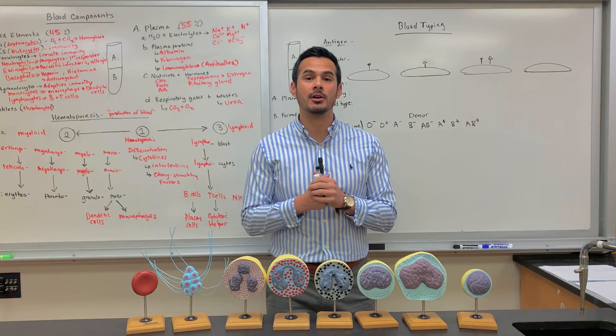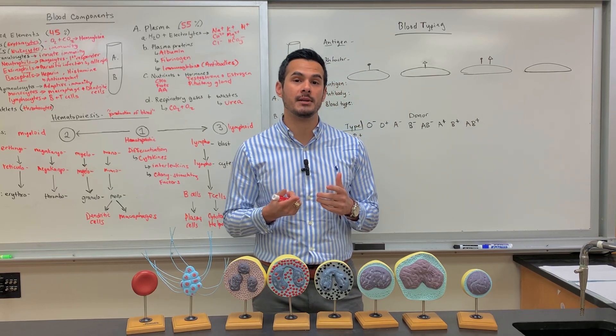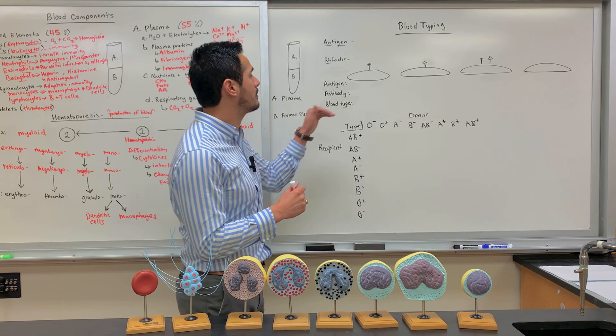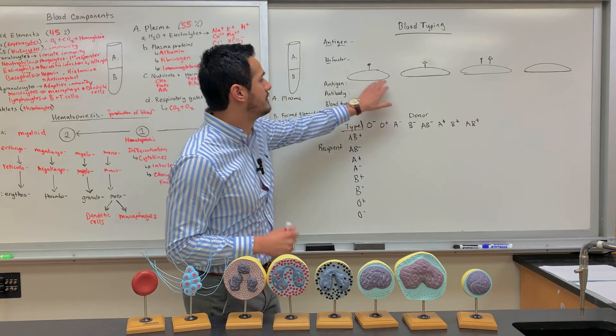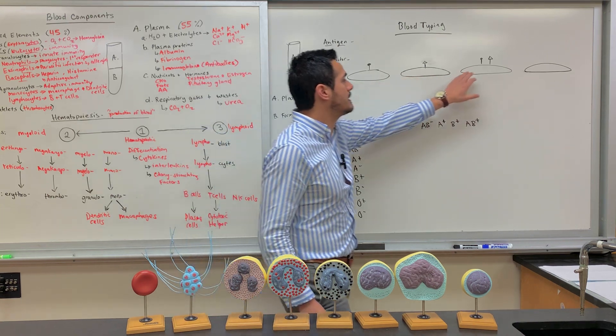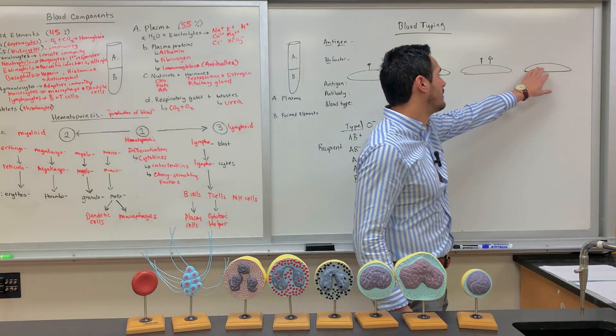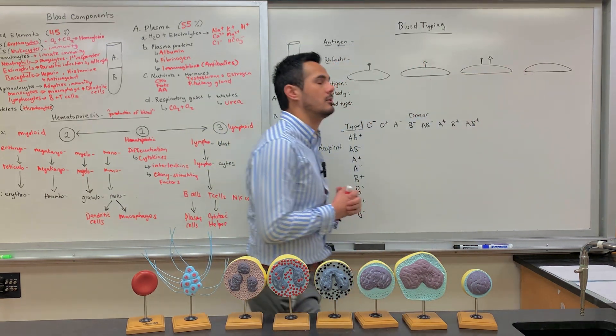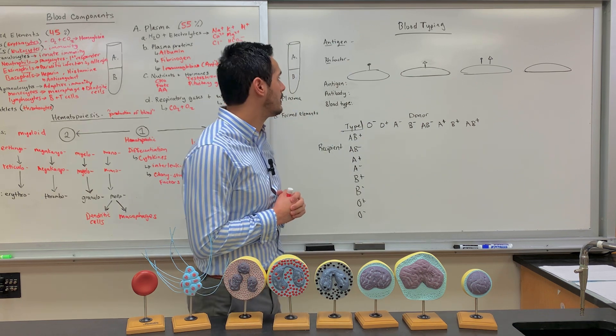In this lecture, I'm going to go over blood typing. What I have drawn here on the board, each of these circles, this is what represents a single individual red blood cell.